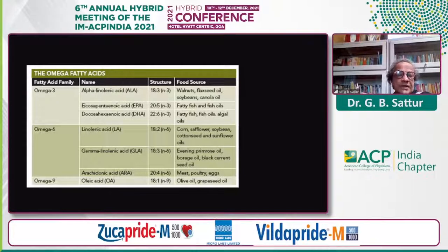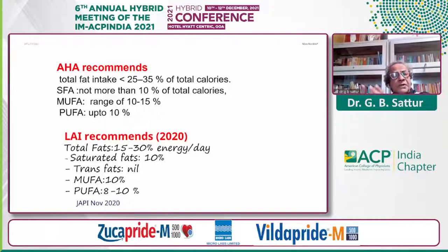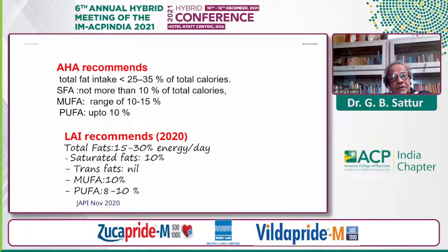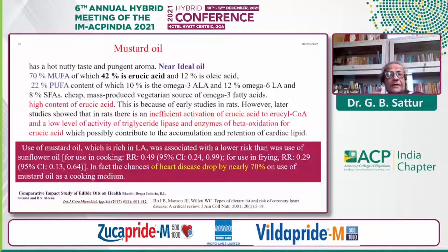Omega-6 is either linoleic acid or gamma-linolenic acid, found in corn, safflower, and soybean. Omega-9 is oleic acid, found in olive oil. We need both MUFA and PUFA — both lower LDL, raise HDL, and have mixed activity on triglycerides. The AHA recommends total fat around 35%, saturated fatty acids not more than 10%, MUFA around 10–15%, and PUFA around 10%. The Lipid Association of India (LAI), published in JAPI 2020, also recommends saturated fat around 10%, no trans fat, MUFA around 10%, and PUFA around 8–10%.